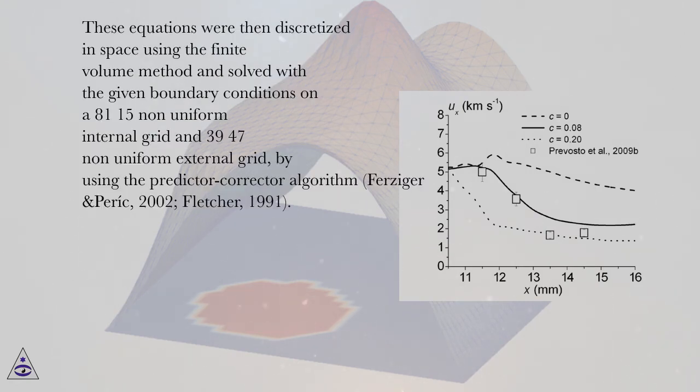These equations were then discretized in space using the finite volume method and solved with the given boundary conditions on an 81×15 non-uniform internal grid and 39×47 non-uniform external grid.